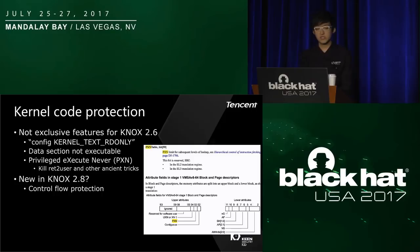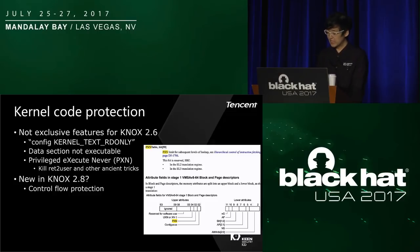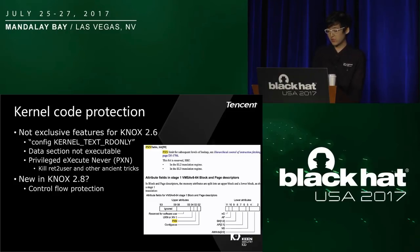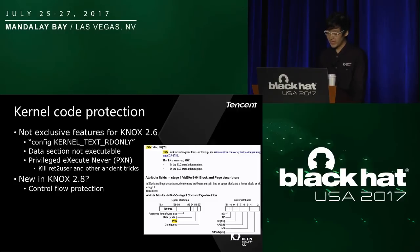RKP provides several protections. The first is kernel code protection. This is not exclusive to Knox 2.6 — most 64-bit Android devices had enabled CONFIG_KERNEL_TEXT_RDONLY, so the text/code section is not writable and the data section is not executable. Based on the ARM feature called Privileged Execute Never (PXN), user code is never executable in the kernel. I also noticed a new feature called Control Flow Protection — also known as Control Flow Integrity (CFI) — in the new release Knox 2.8. I think this may be similar to Control Flow Guard on Microsoft Windows, though I haven't analyzed it technically.